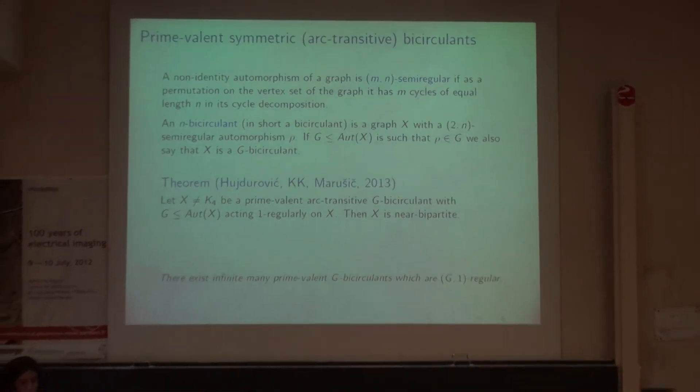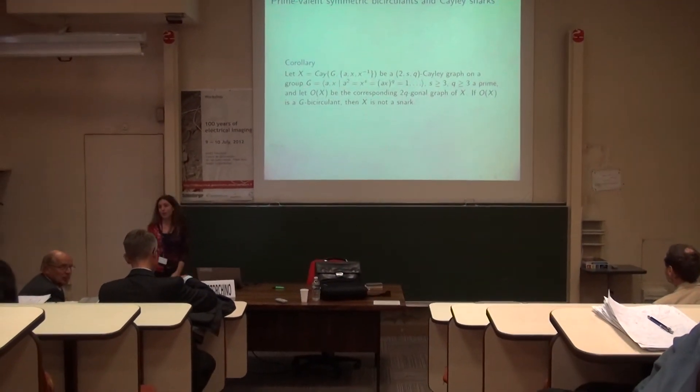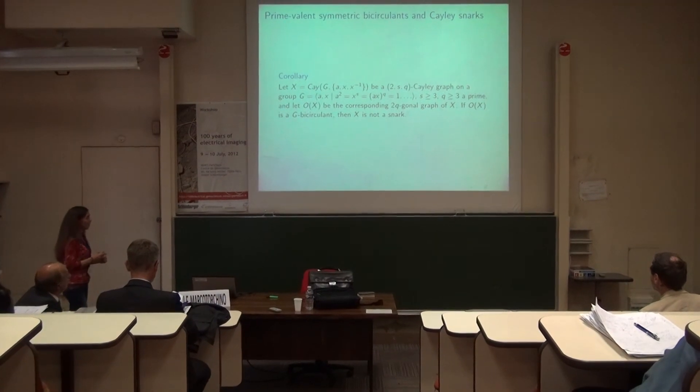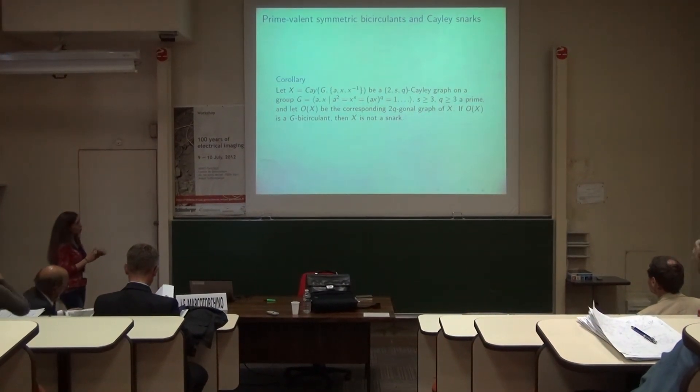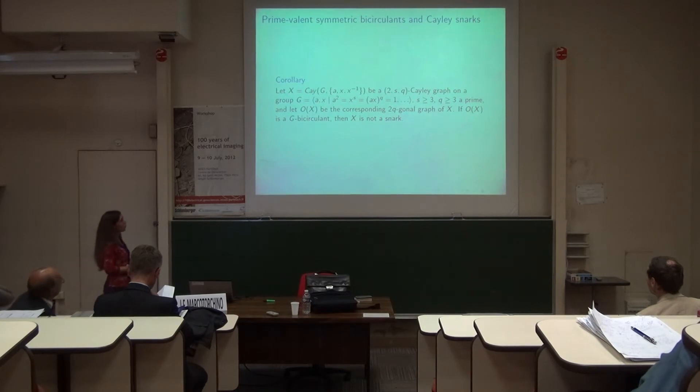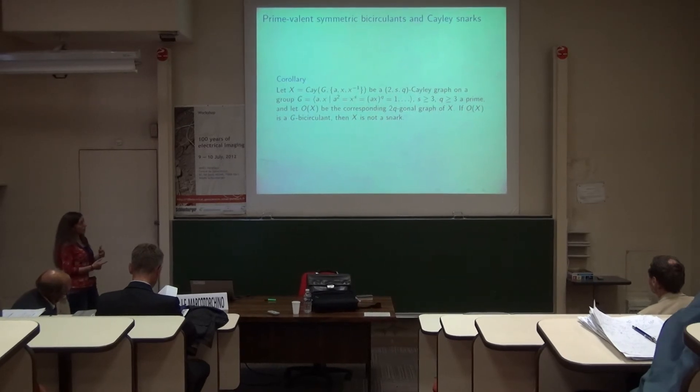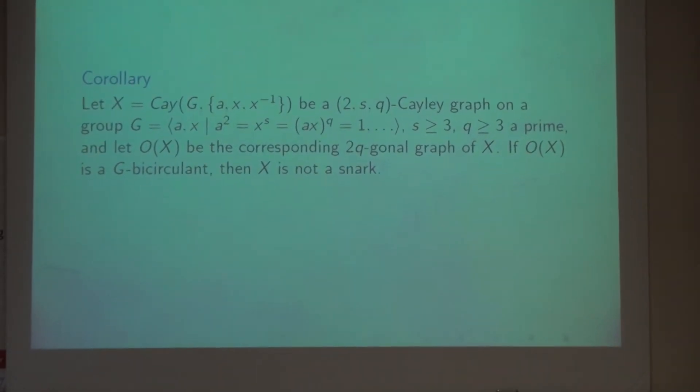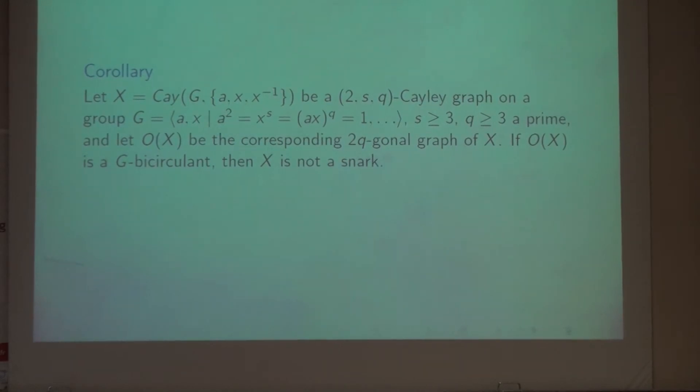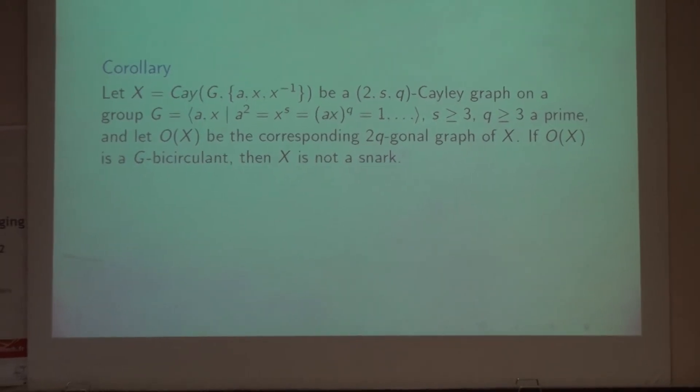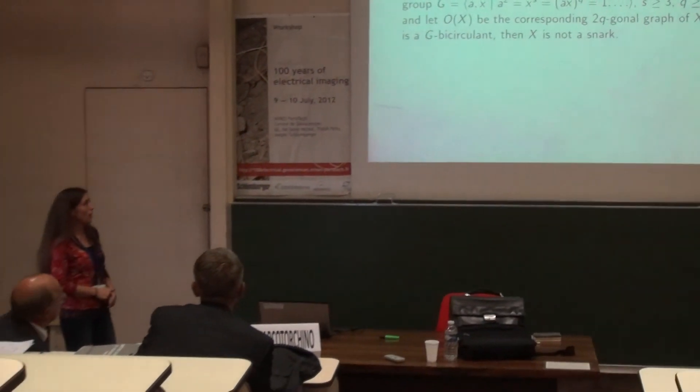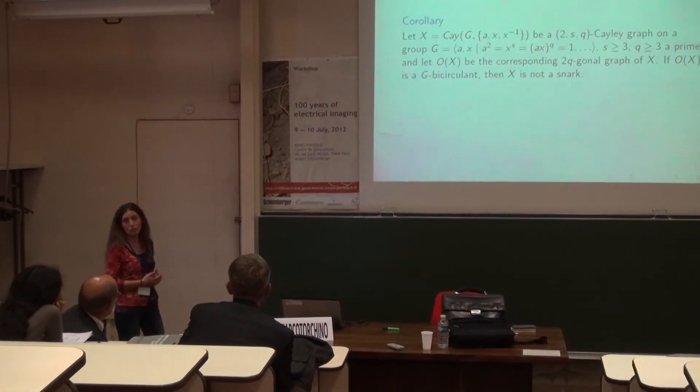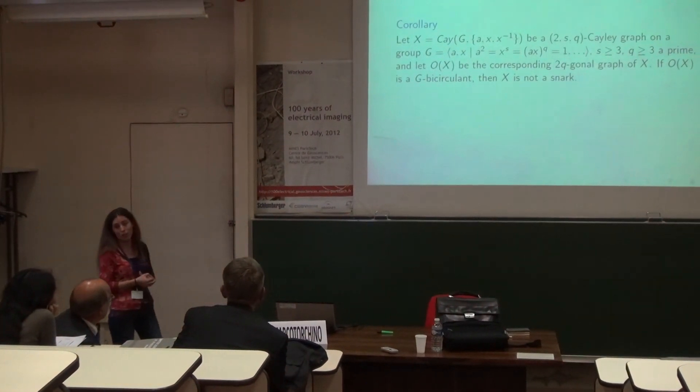And as a consequence we have that cubic 2s,q Cayley graph on a group where q is prime, and such that the corresponding 2q-gonal quotient graph is a G-bicirculant is not a snark. So, it's a really specific result but it still proves the non-existence of infinite organic Cayley graphs.